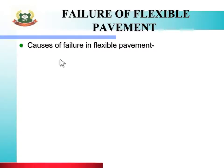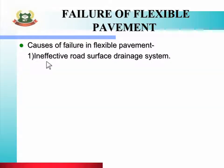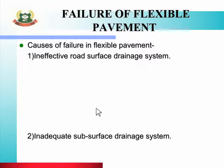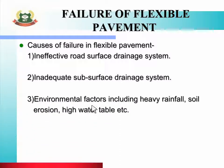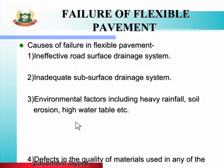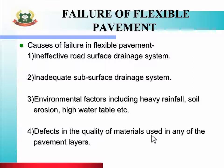Toh dekhte hain causes of failure of pavement. Sabse pehle dekhte hain causes of failure in flexible pavement. First is ineffective road surface drainage system — road surface drainage agar paryapt nahi hai. Second is inadequate subsurface drainage system — road subsurface drainage system agar paryapt nahi hai. Third is environmental factors including heavy rainfall, soil erosion, high water table, etc. — yeh sab failure of flexible pavement ke karan hote hain. Fourth is defects in the quality of materials used in any of the pavement layers — pavement layer mein defective material agar use karte hain.